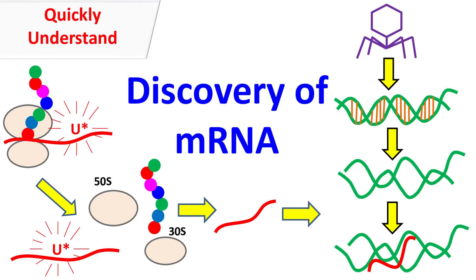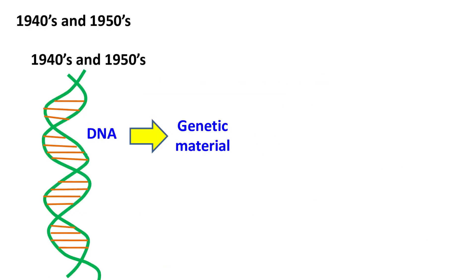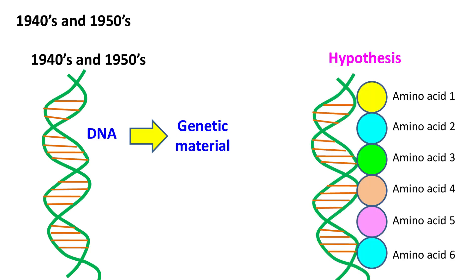Quick biochemistry basics here. Let's talk about the discovery of mRNA. By the 1940s and 1950s, scientists knew that DNA is the genetic material. If DNA is the genetic material, then it should play a key role in protein synthesis. So they had a hypothesis that since DNA is the genetic material, the amino acids might link up on the DNA and form protein.